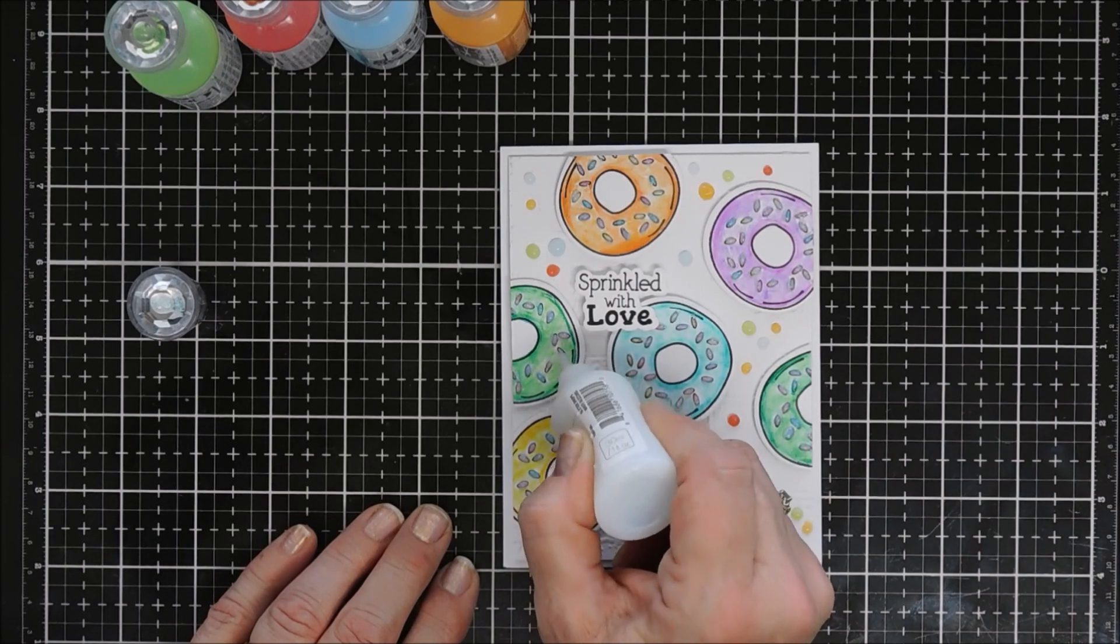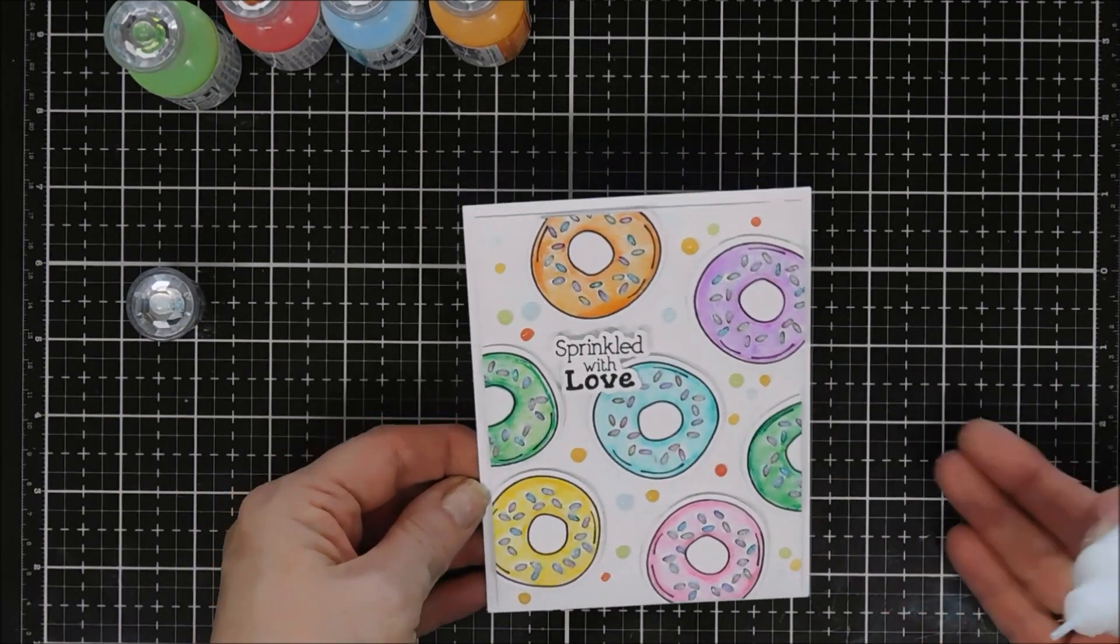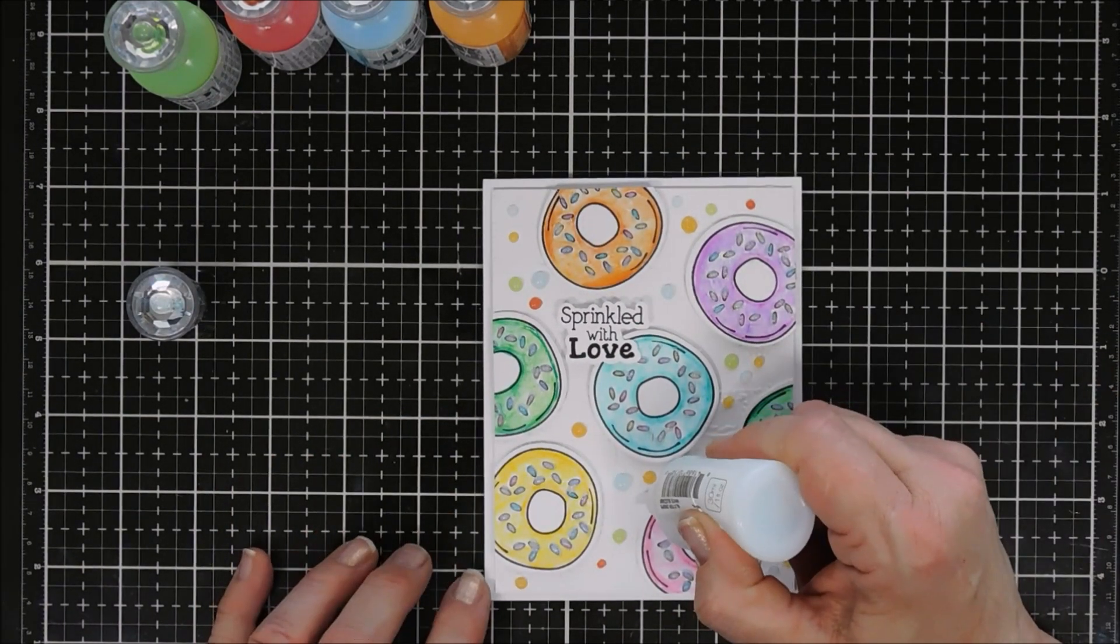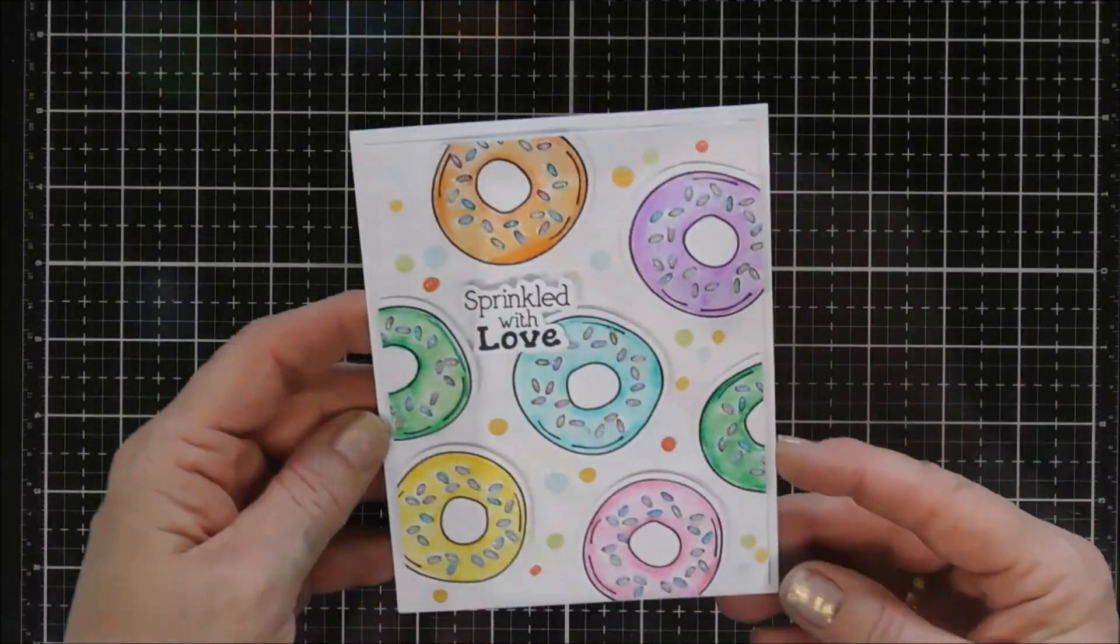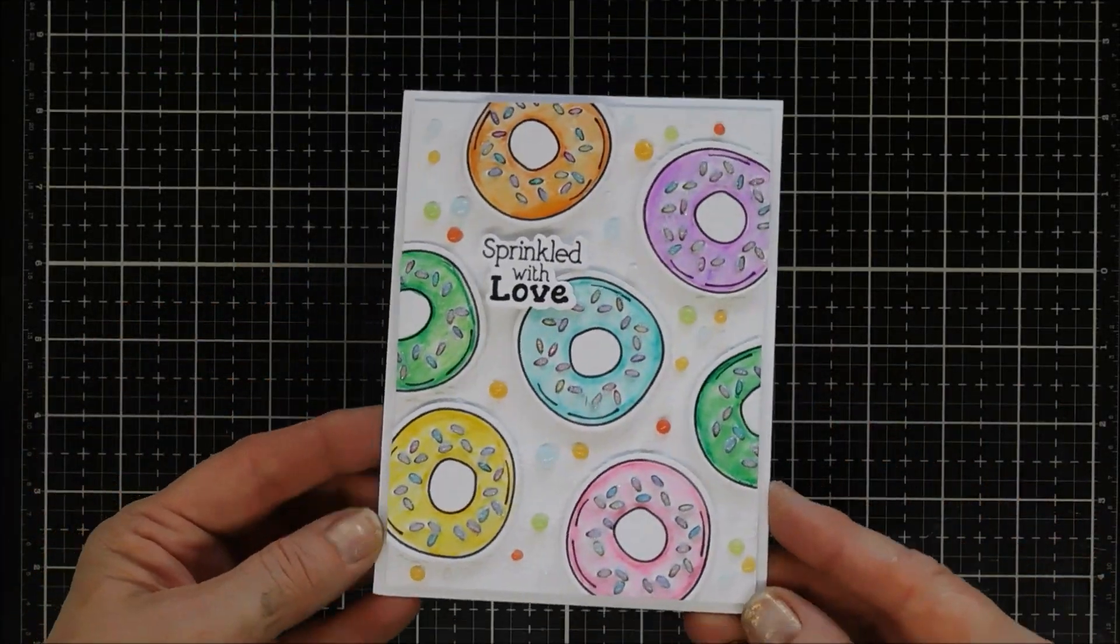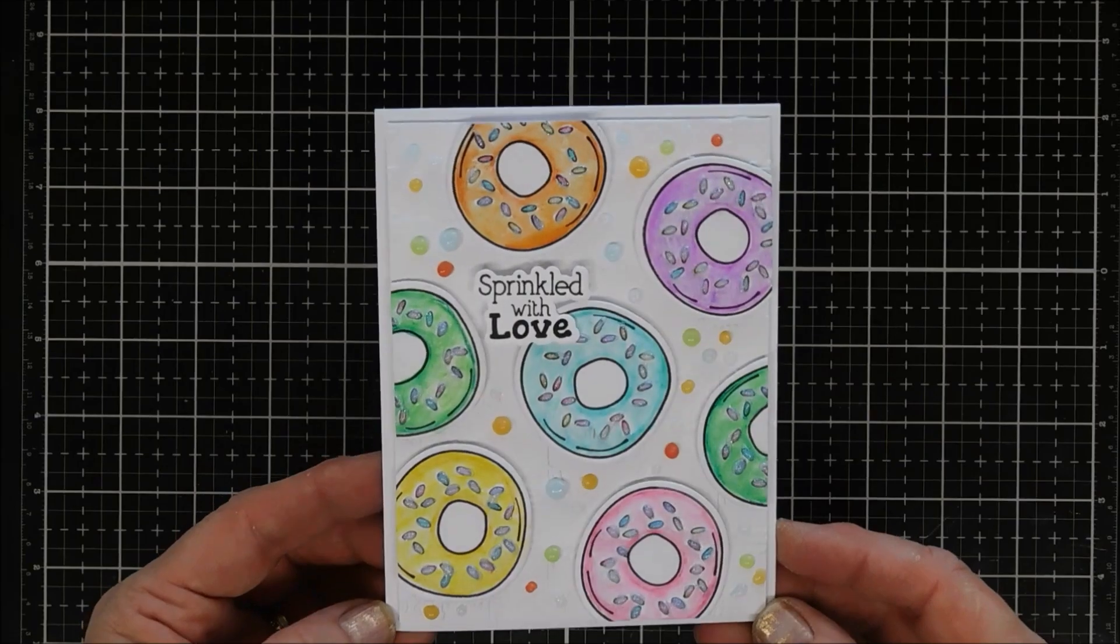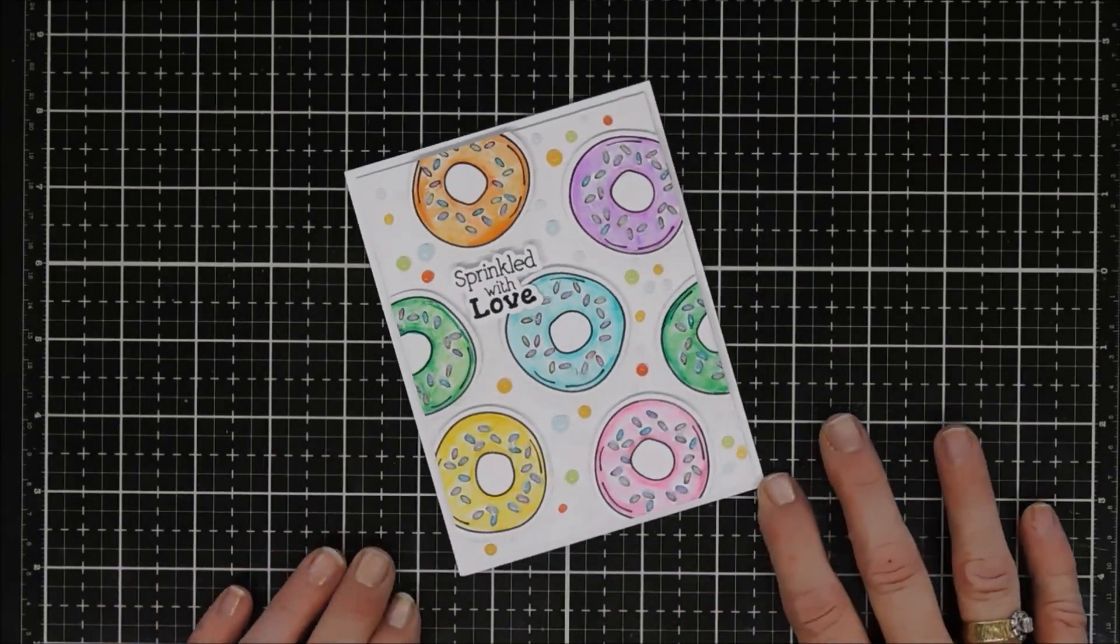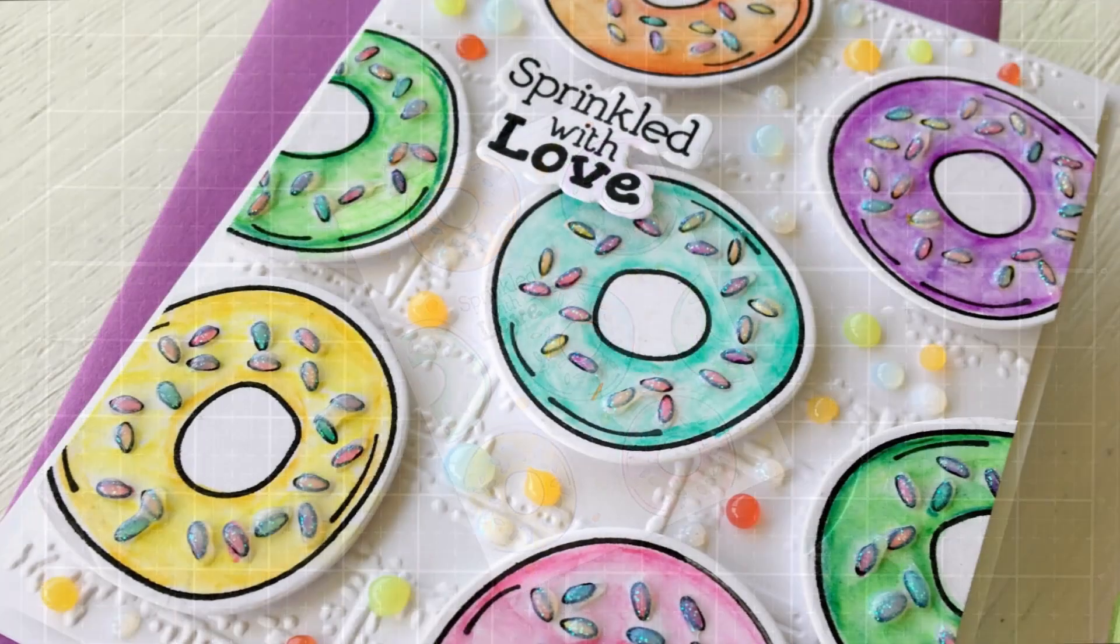Then I thought we would add some sparkle with my Nuvo Glitter Drops. This is White Blizzard. I went over all the sprinkles and then I'm going to add a few little dots here and there. That's my card for today. Now it looks cloudy and when I took pictures, my Nuvo Drops hadn't dried completely yet so they look a little cloudy, but they'll dry clear and nice and sparkly.